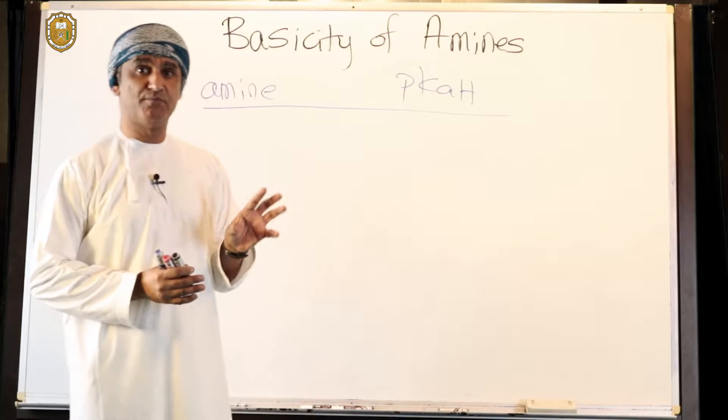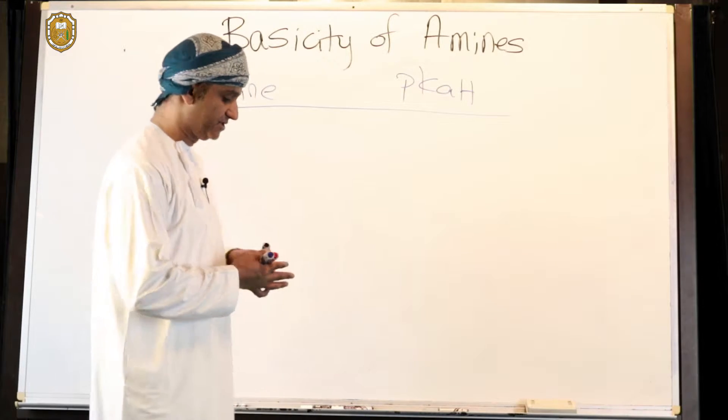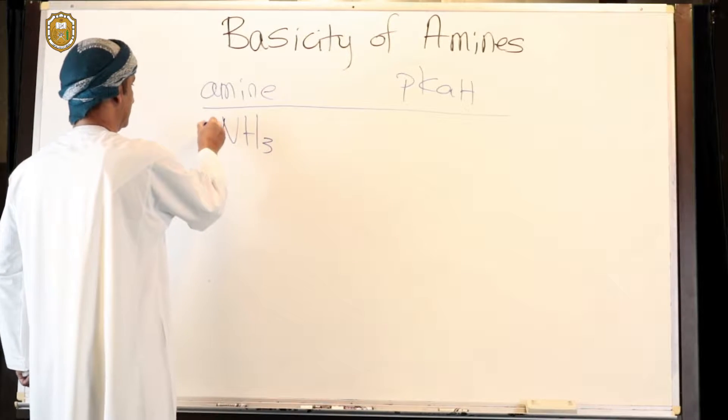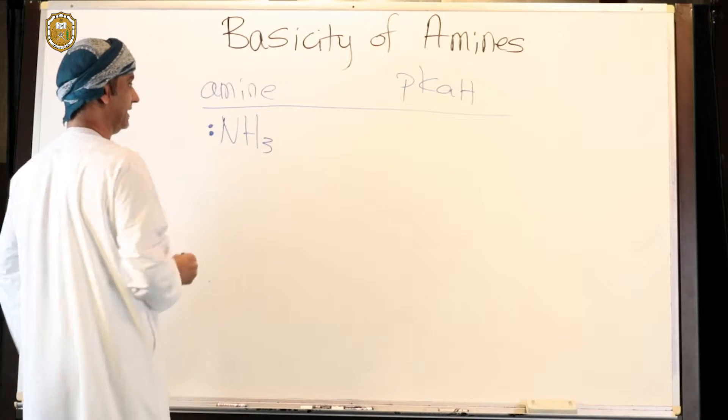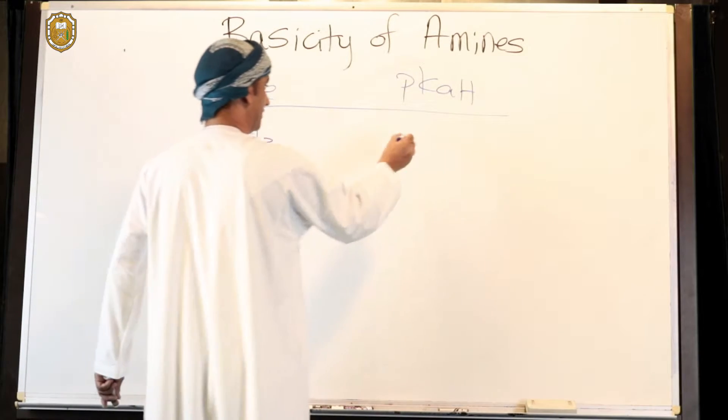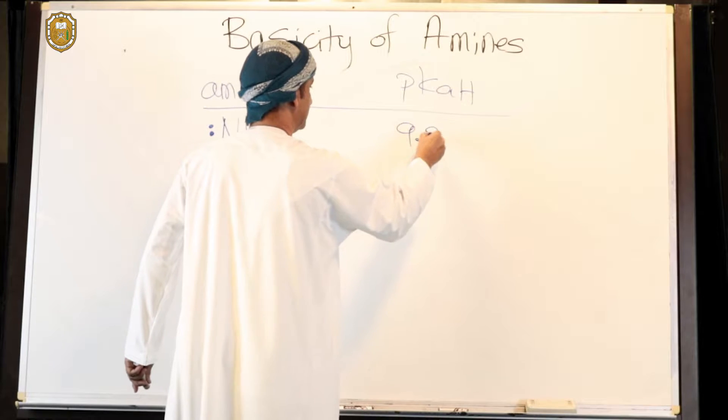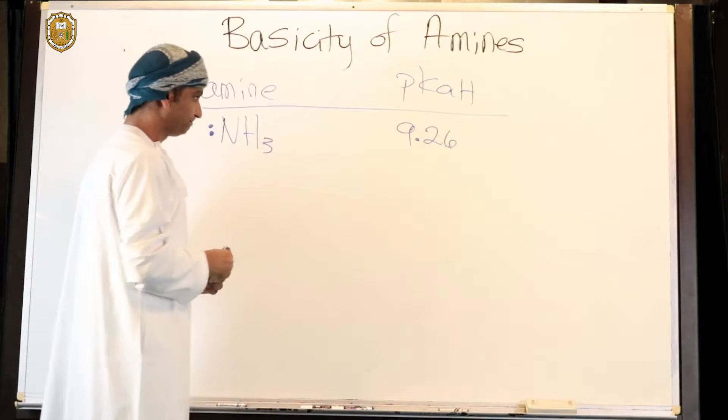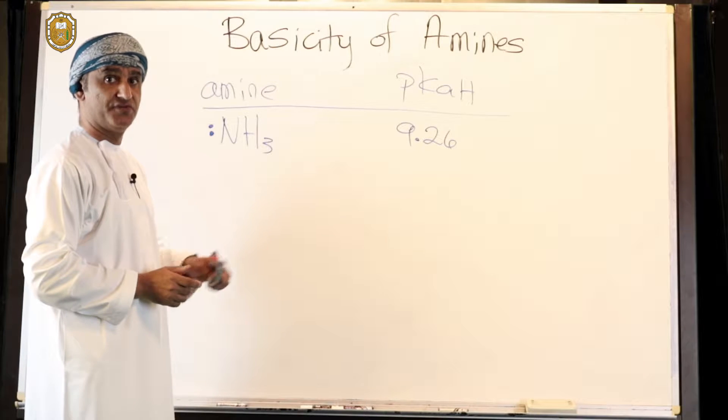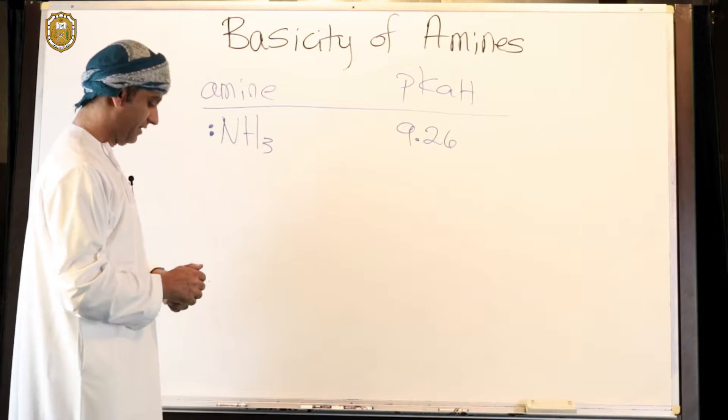Let's take ammonia as the unsubstituted amine. This is the structure of ammonia. Remember, we use pKa, and for ammonia it's actually 9.26 - the pKa of the ammonium ion of ammonia.